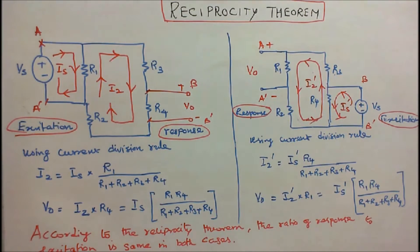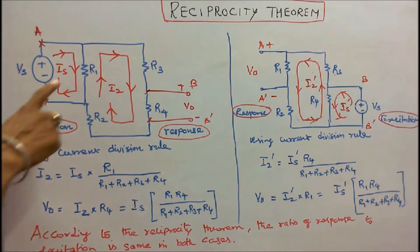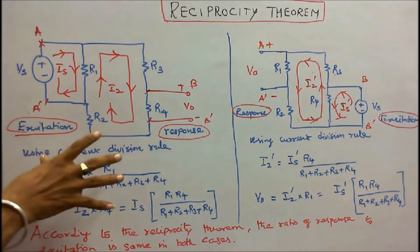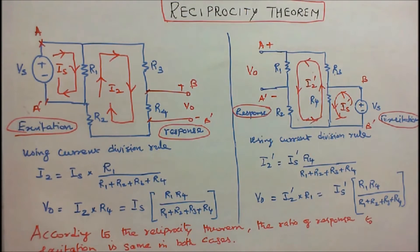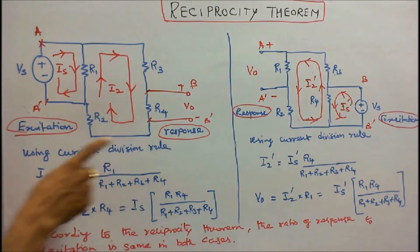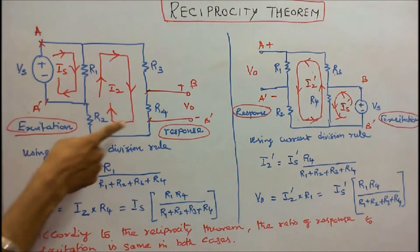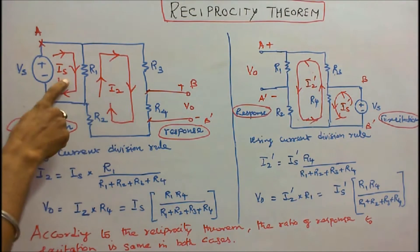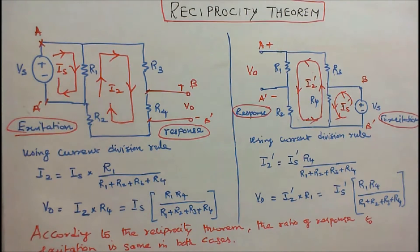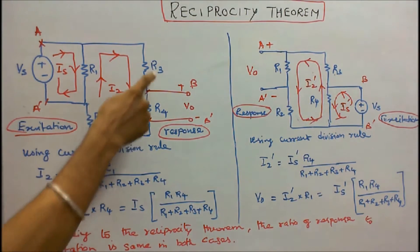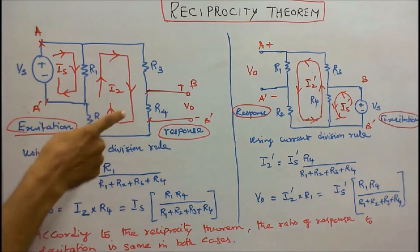Now we will see the proof of the Reciprocity Theorem. Here, 4 resistors and 1 voltage source are connected as shown in the figure. We have to find the voltage across resistor R4. This is V, the source voltage. There are 2 loops — loop 1 and loop 2 — with loop currents IS and I2. Resistors R2, R3, and R4 are all connected in parallel with R1.